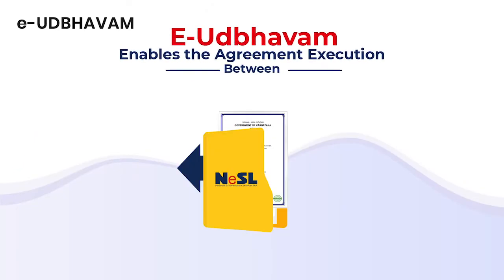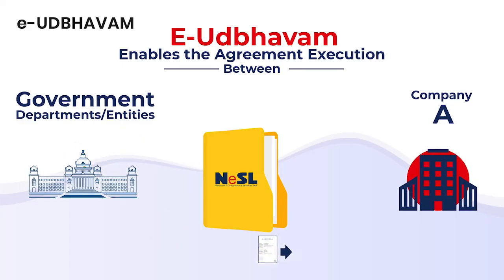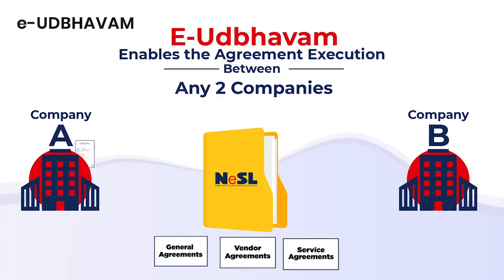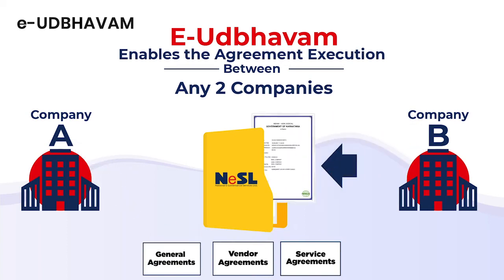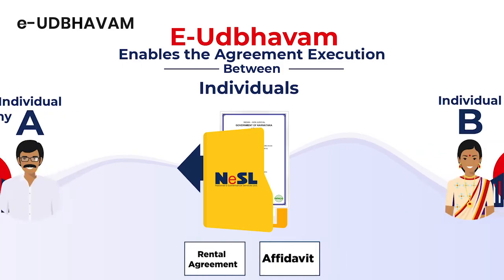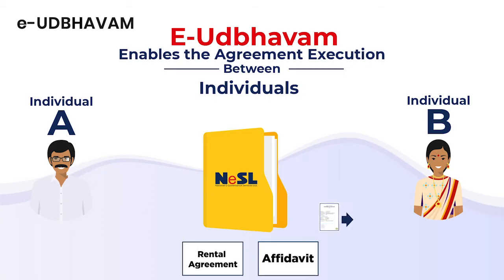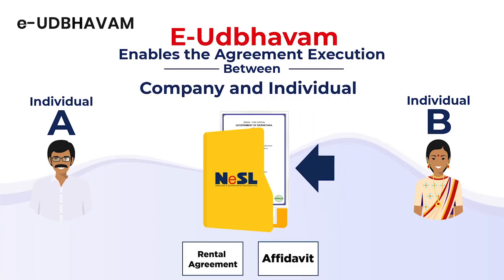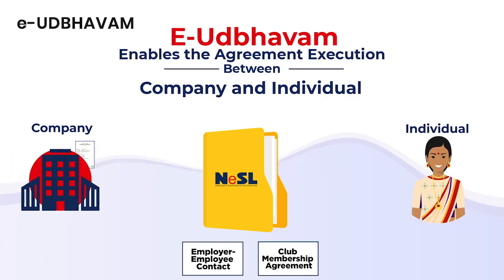e-Udbhavam enables the agreement execution between government and company, two companies, two individuals, and also between a company and an individual, according to articles permitted by the state.